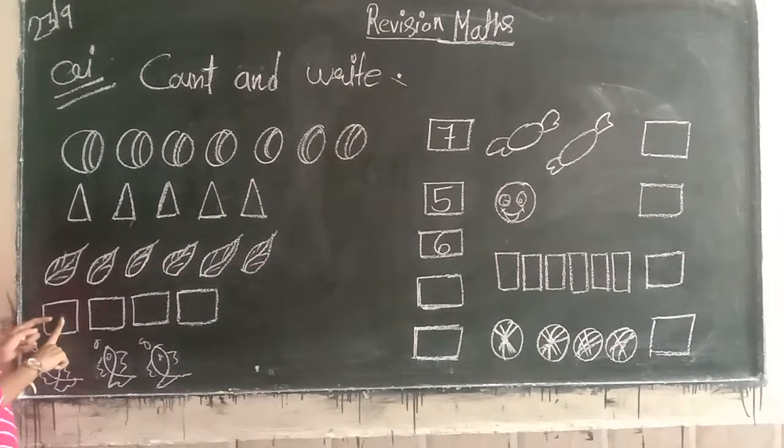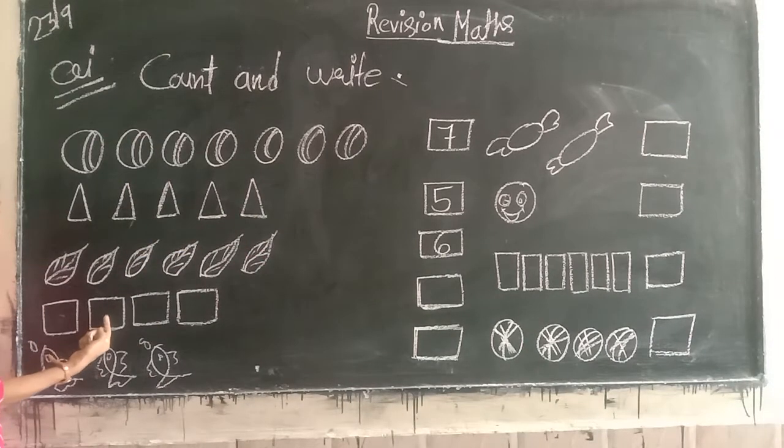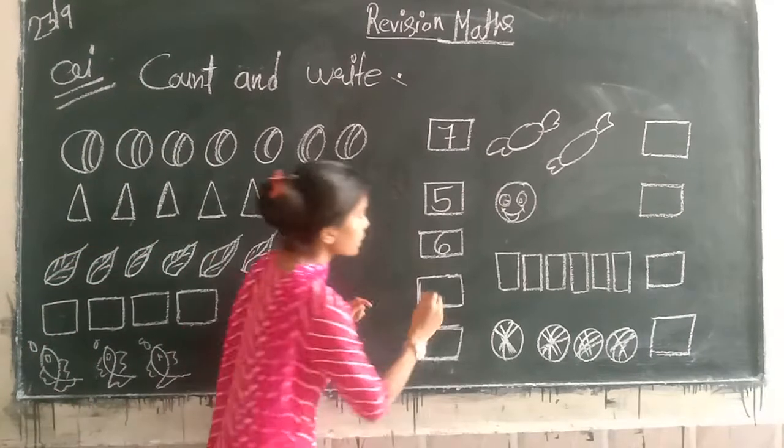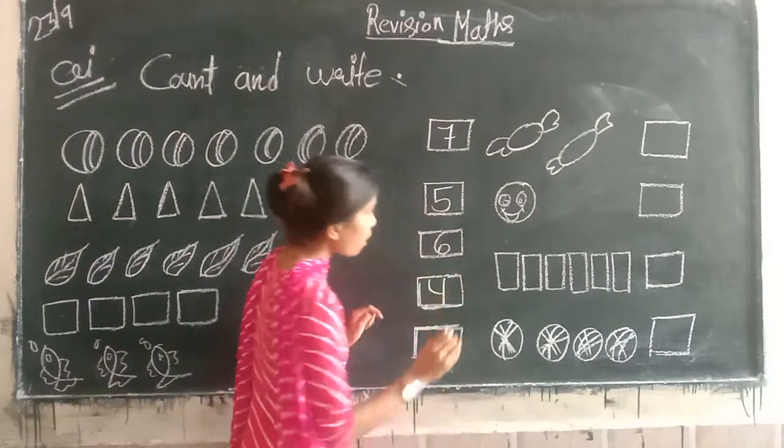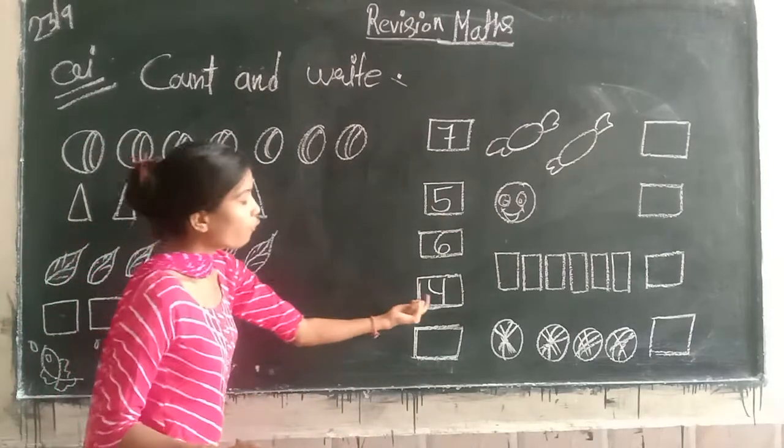Next, squares. How many? One, two, three, four. How many? Four. This is the number of boxes. We write number four.